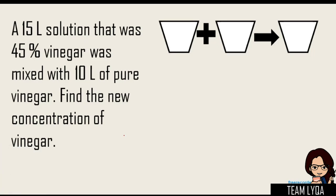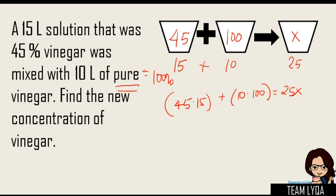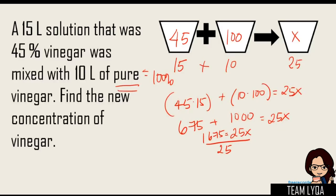That changes our equation. As I said in Part 1 of the video, you just plug in the percentage. So this one would be 45% for the 15-liter solution. You're mixing it with 10 liters of pure vinegar, and since it's pure, that's 100%. So this would be 100 equals x. Add them together: 15 plus 10 is 25. So: 45 times 15 plus 100 times 10 equals 25x. That gives us 675 plus 1,000 equals 25x. So 1,675 divided by 25 equals 67%.